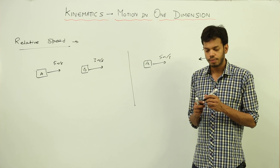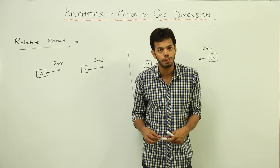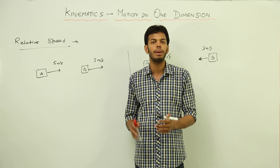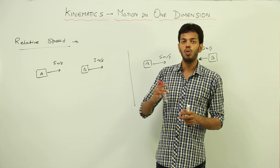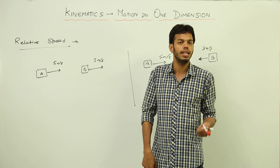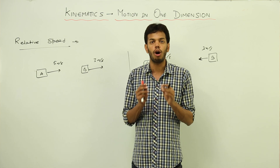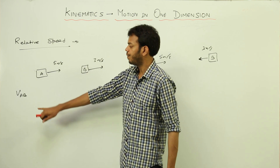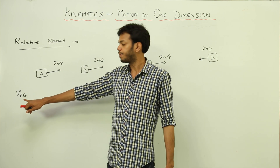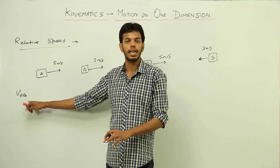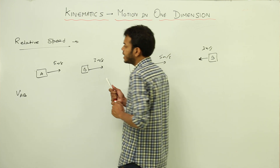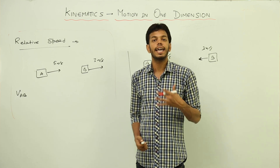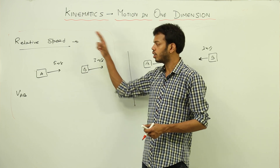Relative speed has a basic requirement: you can accurately measure the speed of another object only if you yourself are stationary. Even if you are also moving, the value won't be accurate. So whichever particle is doing the measuring — the observer — has to be at rest. If I want to write the velocity of A with respect to B, written as V_AB, then B is the observer and B has to be at rest.